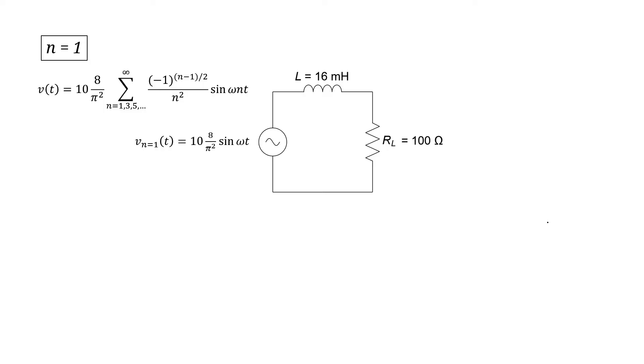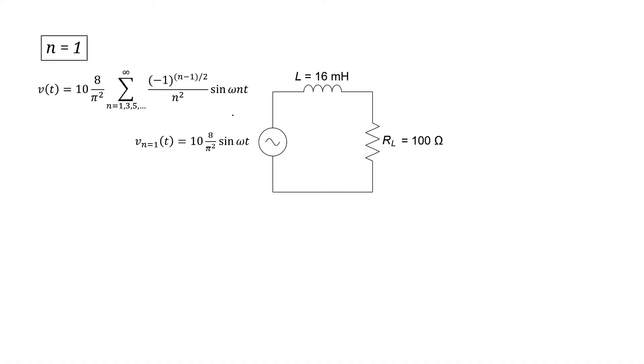Let's take a look at the n=1 source. My strategy first is to calculate the voltage across the load resistor due only to the n=1 source. Then we'll calculate it due to the n=3 source, then n=5, 7, 9, and so on. After we find all of these voltages due to each source, we can add them up to find the total voltage across the load resistor. Once we have that formula, I can find the instantaneous power, and from that calculate the average power, which is what the problem calls for. The voltage for the n=1 source is 10 × (8/π²) × sin(ωt), and the impedance is just jωL.